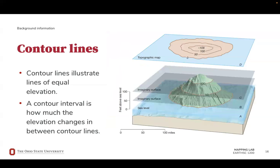Contour lines on a map illustrate lines of equal elevation. For example, a 2,000-meter contour line shows all points on a map that have an elevation of 2,000 meters. These lines are always drawn at evenly spaced intervals; the space between consecutive contour lines is called the contour interval. In the example shown, the contour interval is 50 meters. Note that the contour interval for each map can be different — it's not always 50. An important rule is that contour lines cannot cross, as that would mean one location had two different elevations, which is not possible.